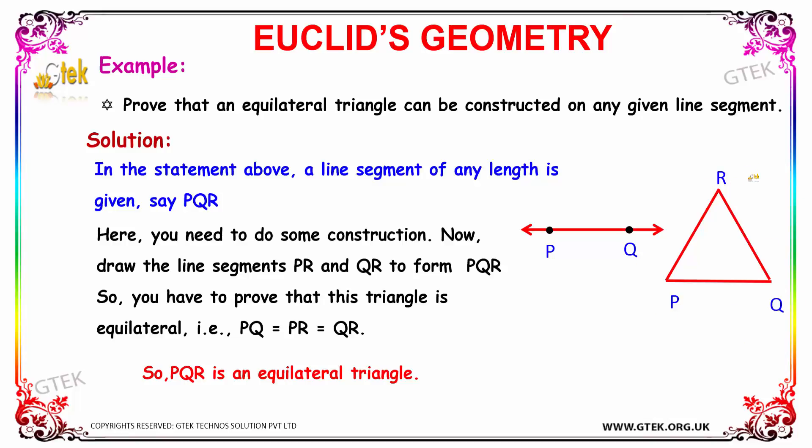So we need to prove that this triangle is equilateral, which can be implied as PQ equals PR equals QR. So if three sides are equal, then it is an equilateral triangle. By proving PQ equal to PR equal to QR, it is proven that the triangle PQR is an equilateral triangle.